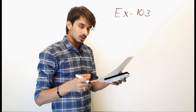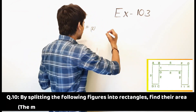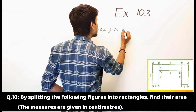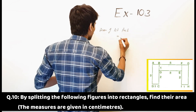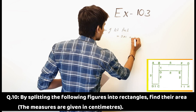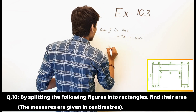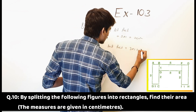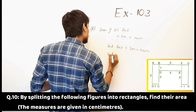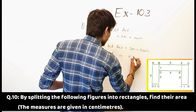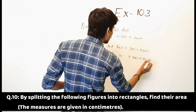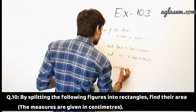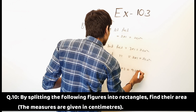Part B: area of first rectangle is equal to 3 multiplied by 1 is equal to 3 centimeter square. Second rectangle is equal to 3 multiplied by 1 is equal to 3 centimeter square. Third rectangle is also 3 centimeter square. So total area of complete figure is equal to 3 plus 3 plus 3 is equal to 9 centimeter square.